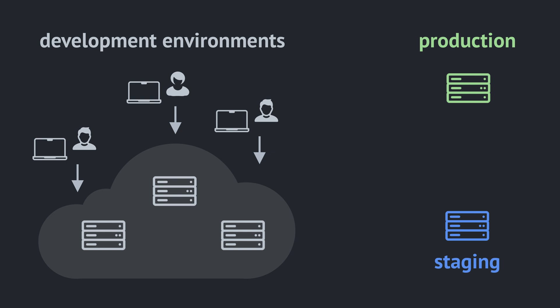After completing a feature, developers deploy it on staging for testing and review, and wait for a green light to release it to production. This is what we call staging: a separate environment that people use to test new features and approve them for production release. If there is no separate environment — for example, features are reviewed in the development environment or in production — we assume there is no staging. If there is a separate environment but it's not used for approvals, again, we assume there is no staging.